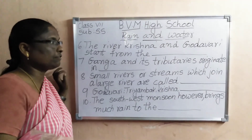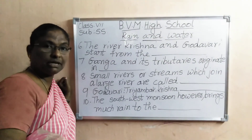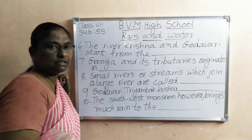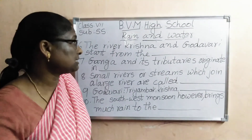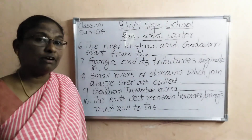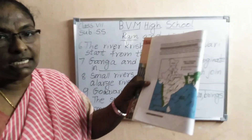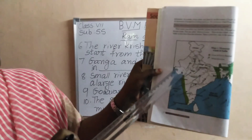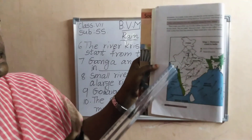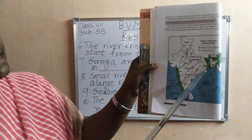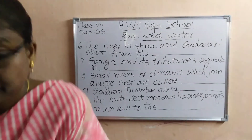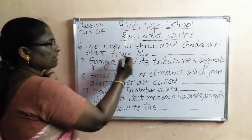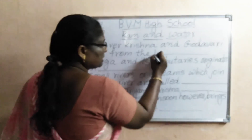The river Krishna and Godavari — where do they start from? These are the famous rivers in our AP. They start from the Western Ghats. We can locate like this — Western Ghats on this side and Eastern Ghats on the other side. Both rivers start from the Western Ghats.